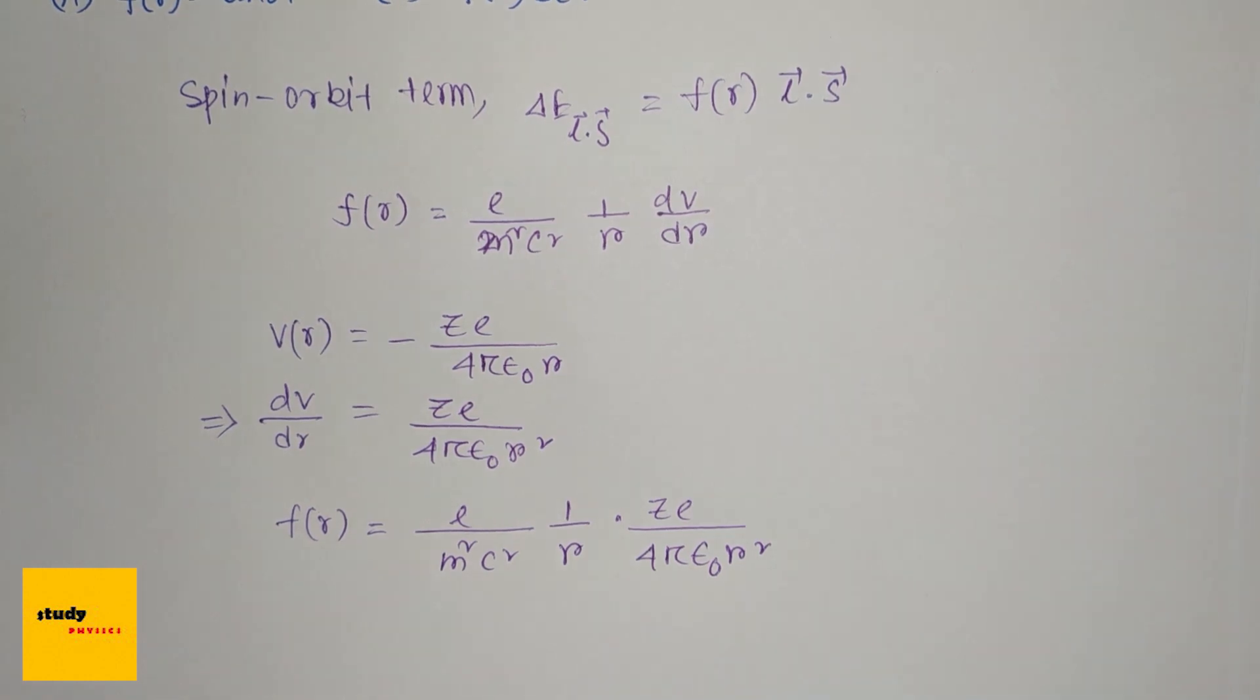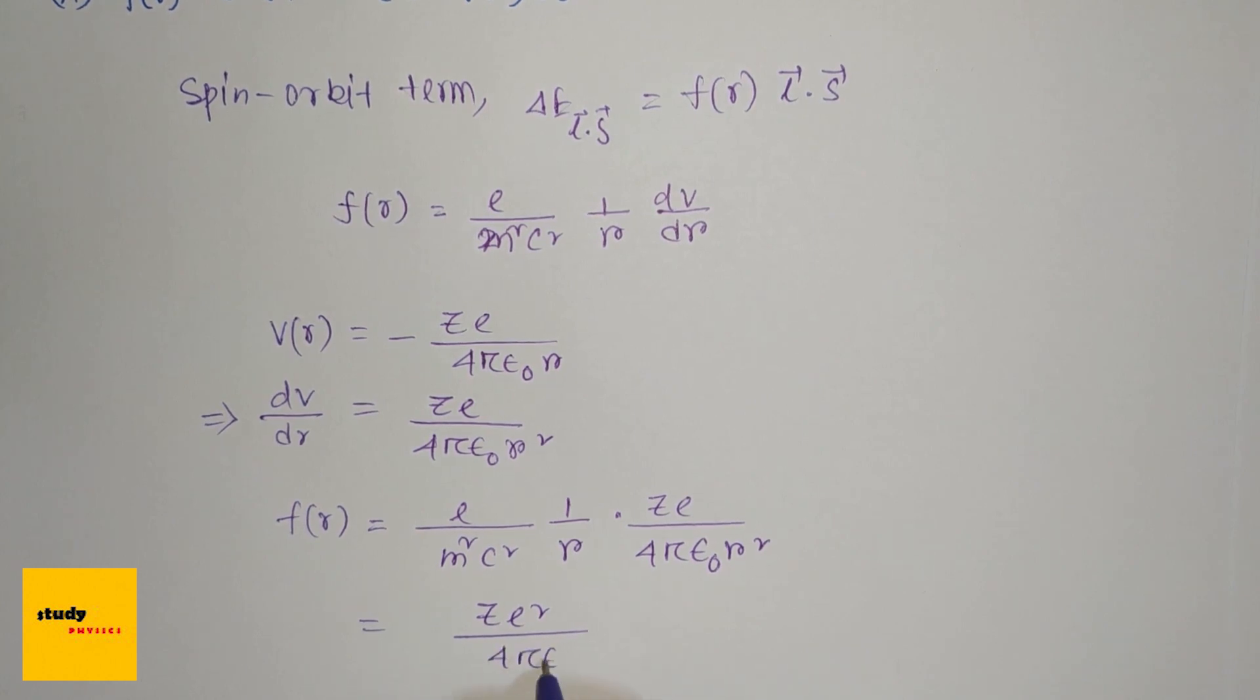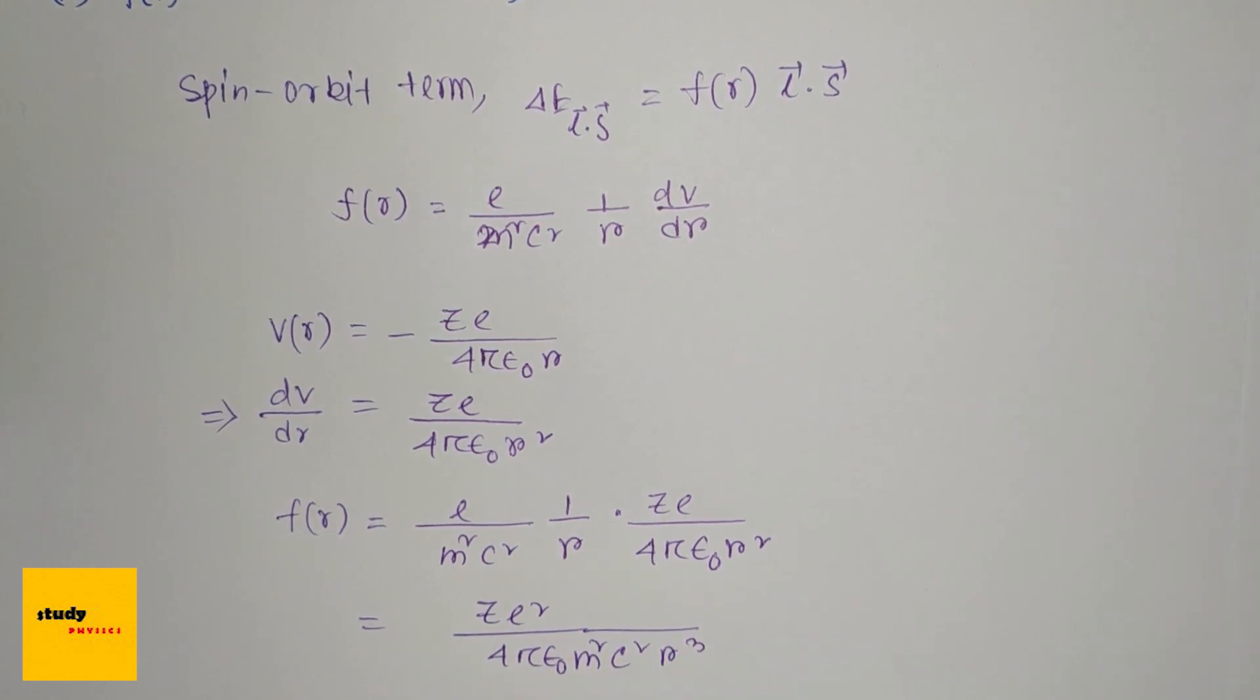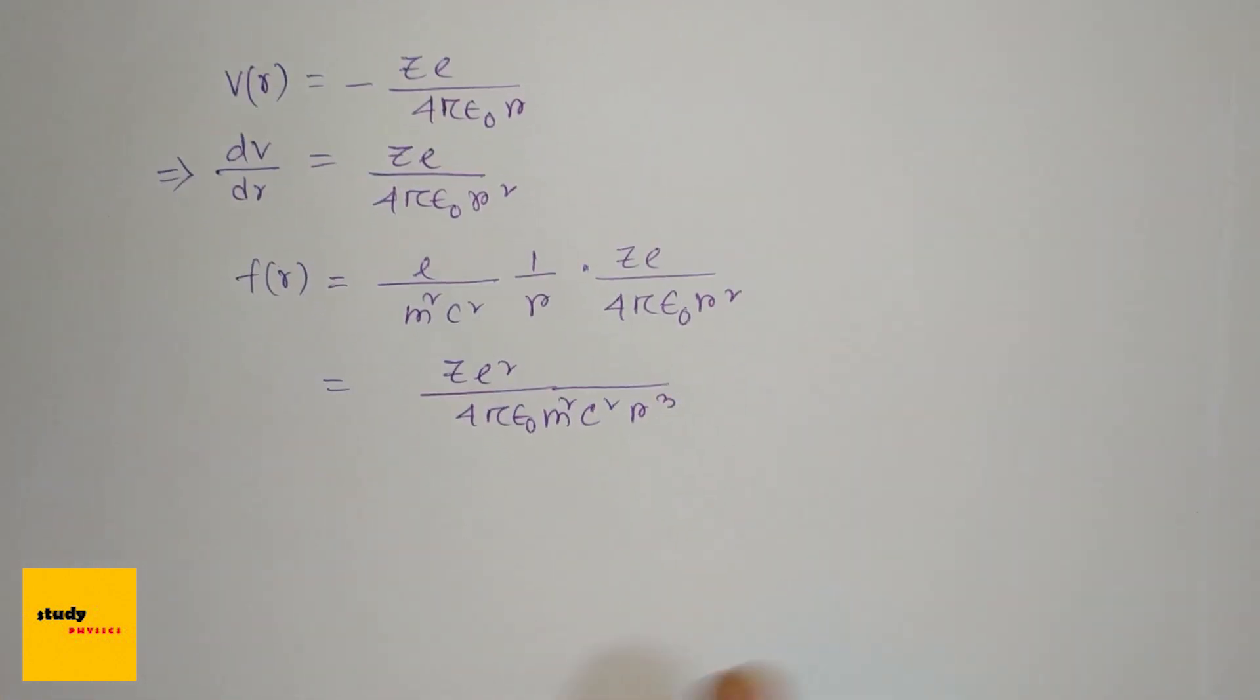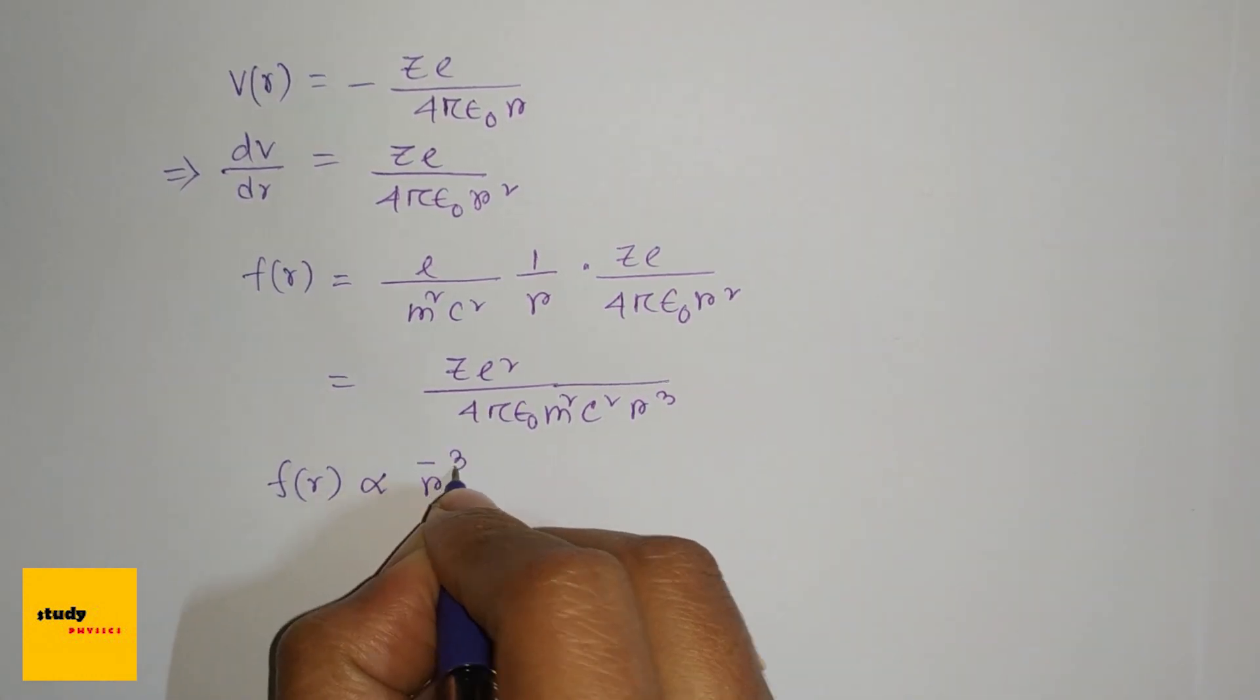So from here we can see that f(r) is proportional to r⁻³.